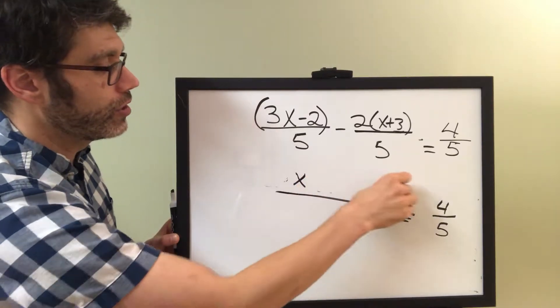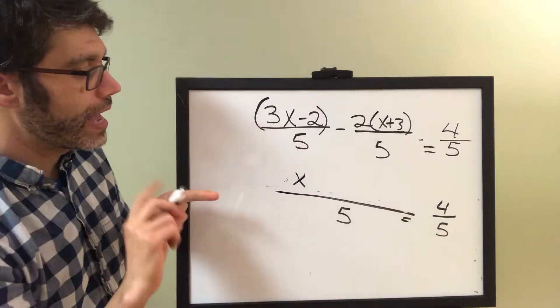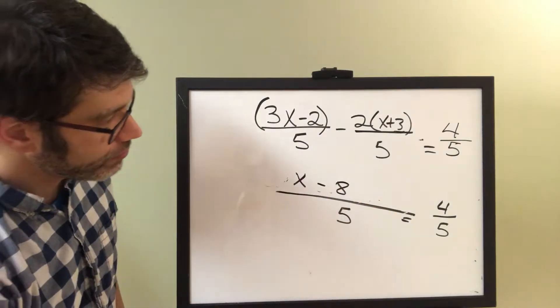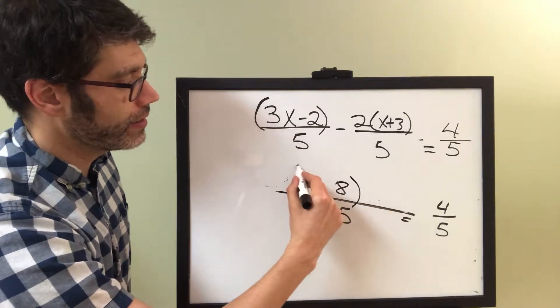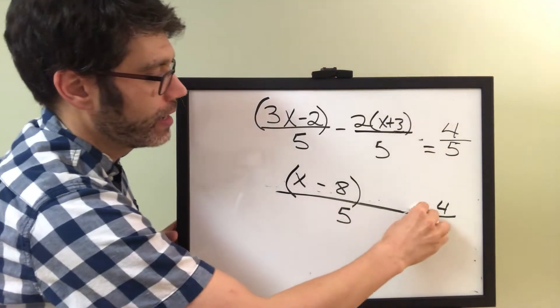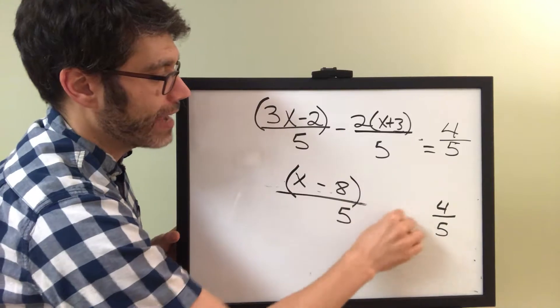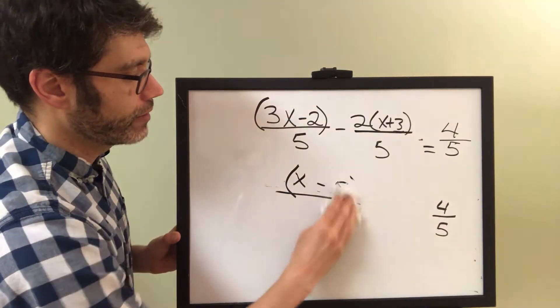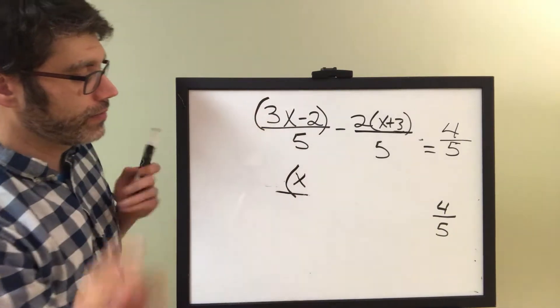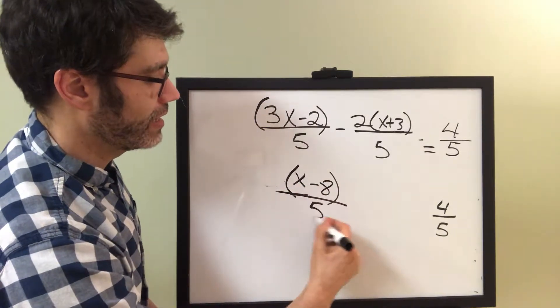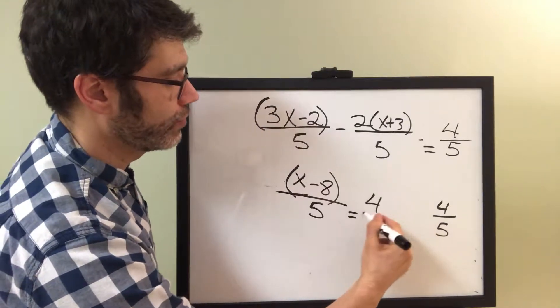So, this will all reduce down to x minus 8 in our numerator. And let's put a parentheses around it now to make sure that we're keeping them nice and packaged together. So, I'm just going to bring this in a little bit here. x minus 8 is in our numerator, 5 is in the denominator, and then we have that equal to 4 fifths.